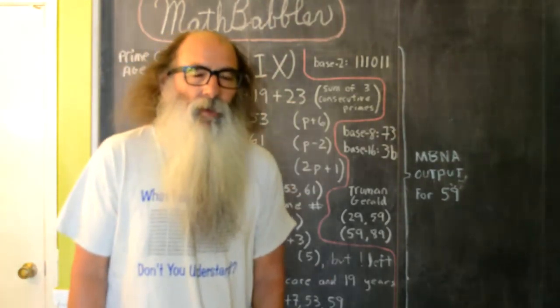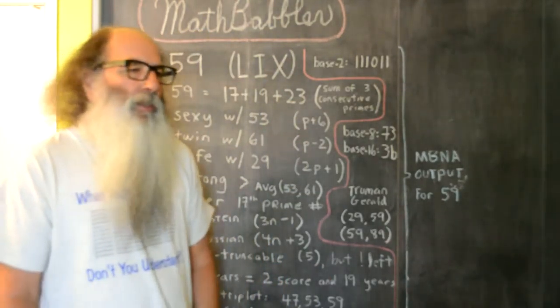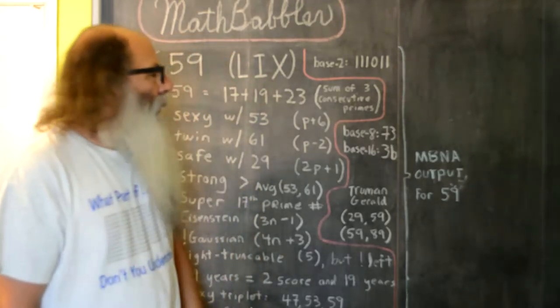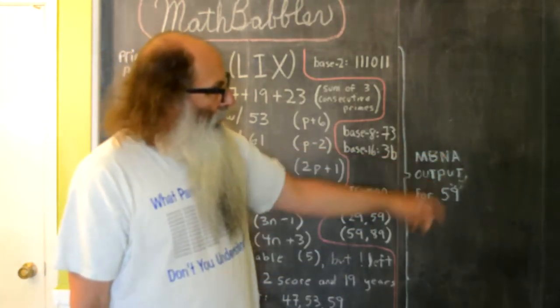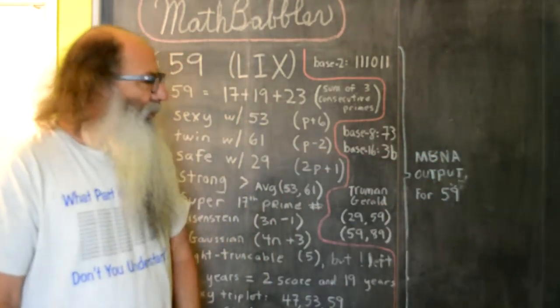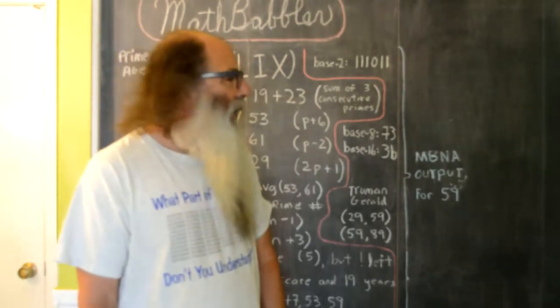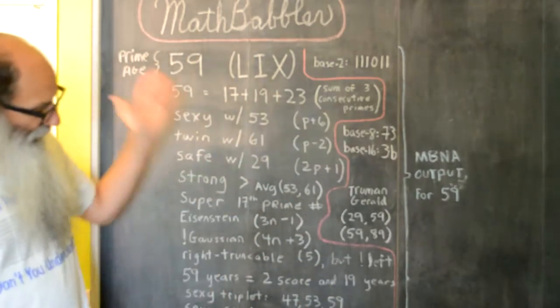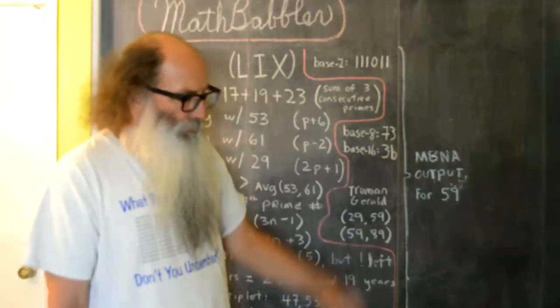A few days ago I turned 59 years of age. So I went to my math babbler number analyst and I typed the number 59 into it, and what's up on the board here is the output that I got from my program.